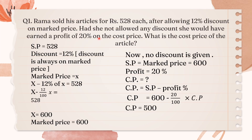So how we will be solving this question? Selling price given is 528, and discount given is 12%. Discount is always given on the marked price. We assume that the marked price is X. So X minus 12% of X equals 528, that is X minus 12/100 times X equals 528. We calculate the value of X, which is the marked price, equal to 600 rupees.